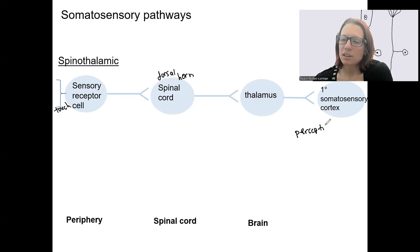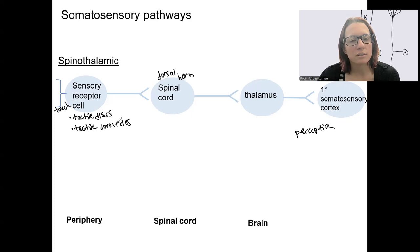This information is typically perceived by the body. We are aware of it. The types of touch that are transmitted in this system are via tactile discs, tactile corpuscles, lamellar corpuscles also called Pacinian corpuscles, and bulbous.